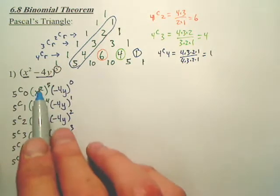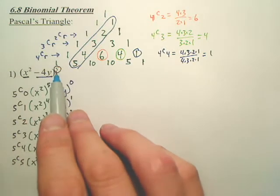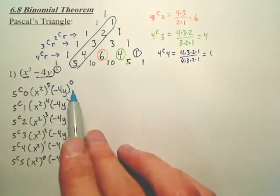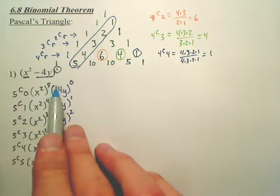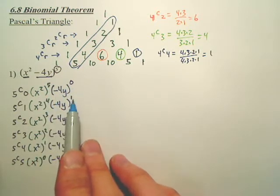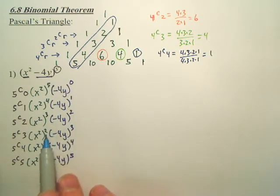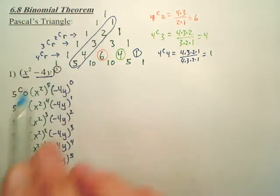You take your first piece, start with the fifth power, work down to the zero power. The second piece, you start with the zero power and work up to the fifth power. What's 5 plus 0? Five. 4 plus 1? Five. 3 plus 2? These powers should always add up to that power.